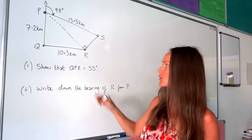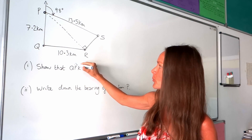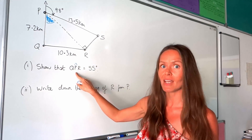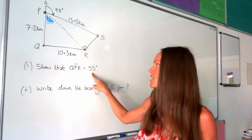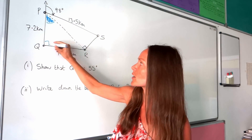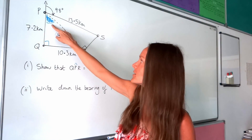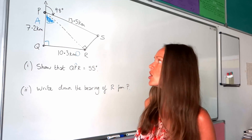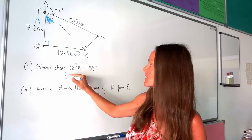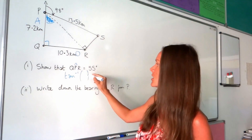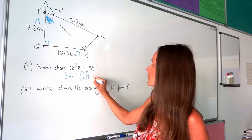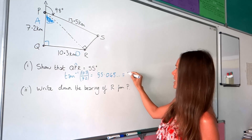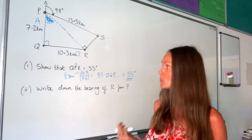In this question we have to show that angle QPR equals 55 degrees. QPR is angle P. Since it's a 'show that' question we calculate the angle and check we get 55 degrees. Labelling the two given sides — the opposite side opposite the angle and the adjacent side against it — we use tan. So tan minus one of opposite divided by adjacent: 10.3 divided by 7.2, which gives 55.045 degrees, approximately equal to 55 degrees. That's the working out part done.